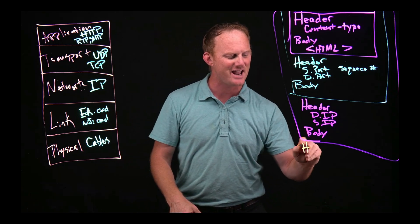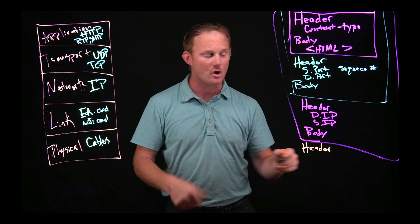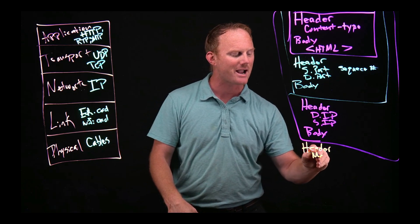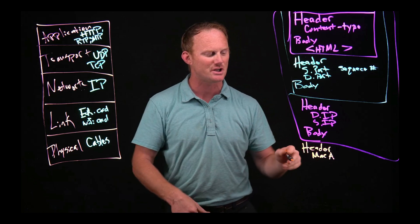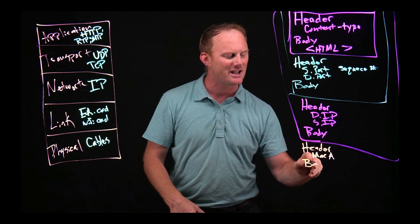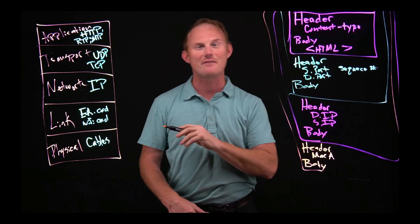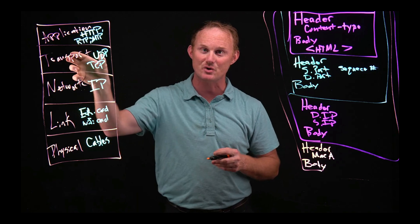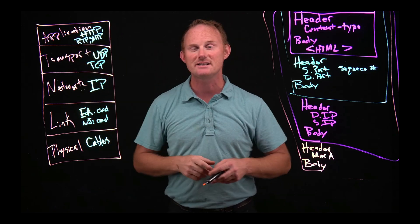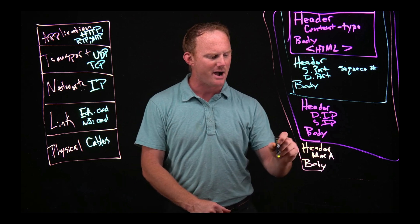But we get to the link layer. It has a header and the header for things like your Ethernet card or Wi-Fi. It might be like a Mac address of the source machine as well as the destination machine. It has a body and the body is going to be everything above it. It will contain the entire network layer, which already contains the entire transport layer, which contains the entire application layer.